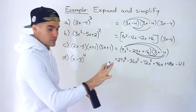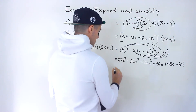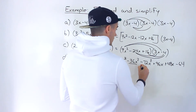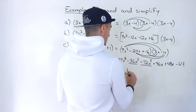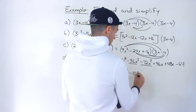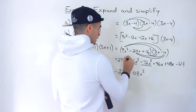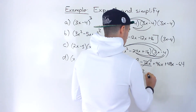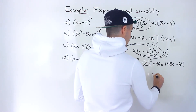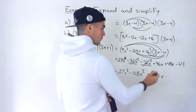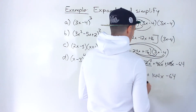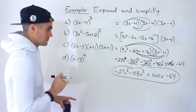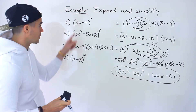So that's expanded, but now we've got to simplify all the like terms. The x cubed is by itself: 27x cubed. Then negative 36x squared minus 72x squared gives negative 108x squared. Then 96x plus 48x gives positive 144x. And then we've got minus 64 at the end. So this here ends up being the final expanded and simplified answer for part a.